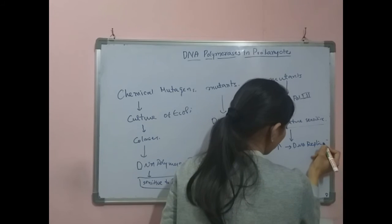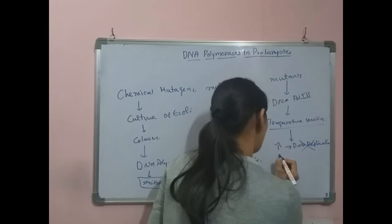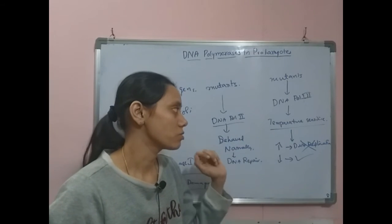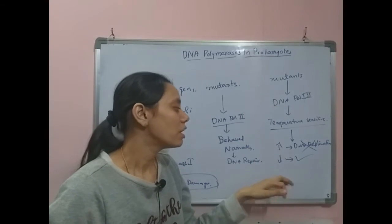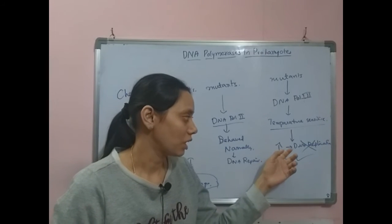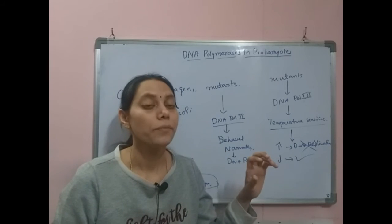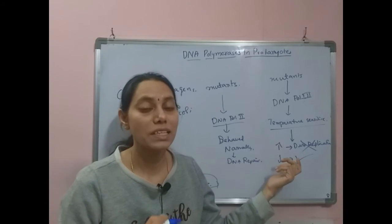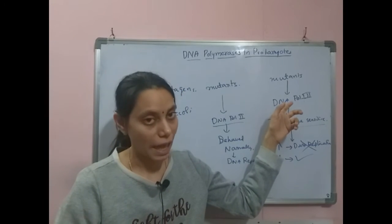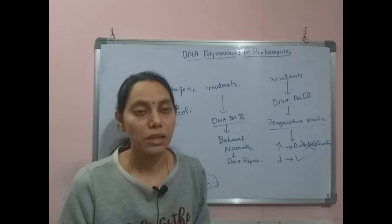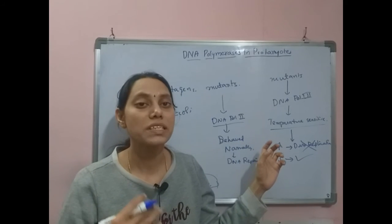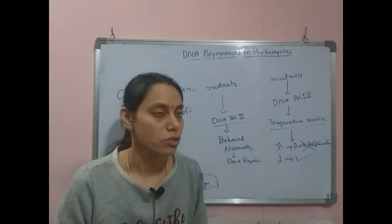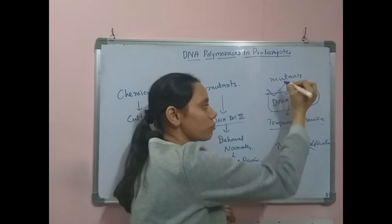At high temperatures, DNA replication was blocked in these temperature-sensitive mutants defective in DNA polymerase 3. At low temperatures, replication was permitted. Scientists understood that when DNA polymerase 3 is active, replication is carried out, and when it is inactive, cells are unable to copy their sequences. This established that DNA polymerase 3 is the major replicating enzyme.